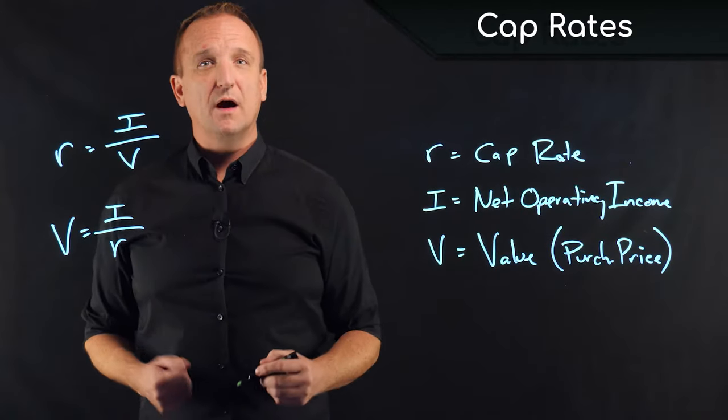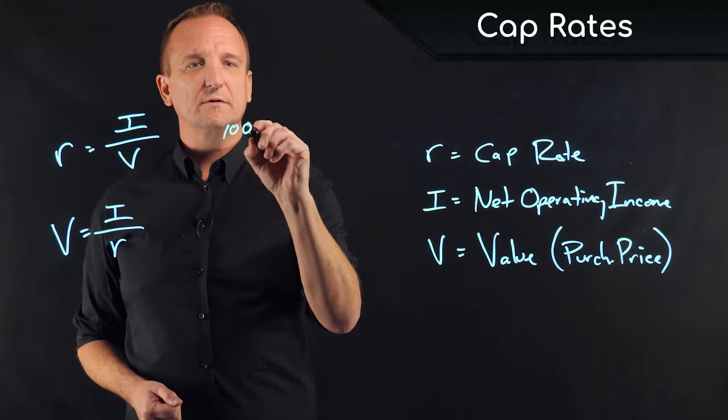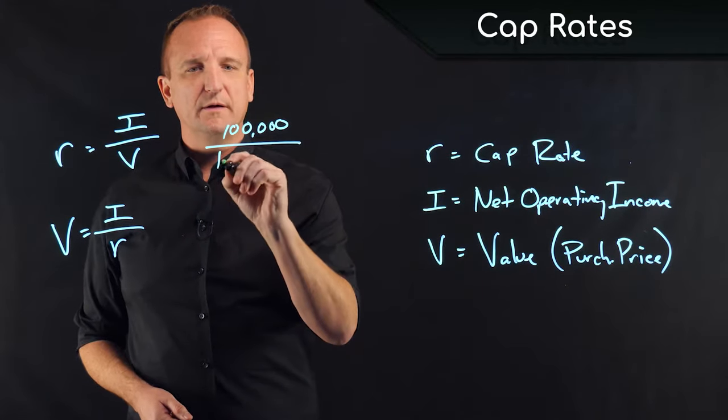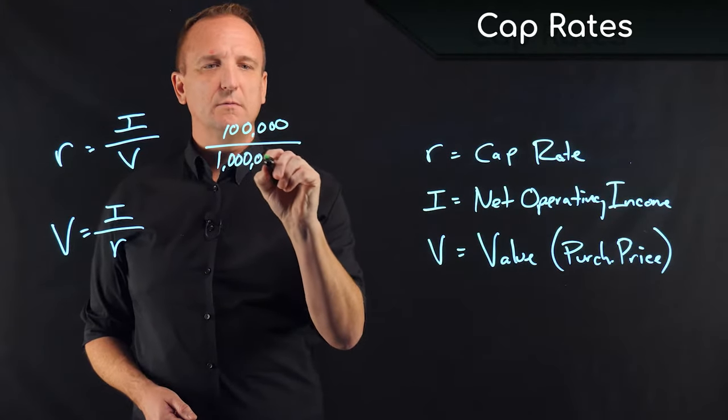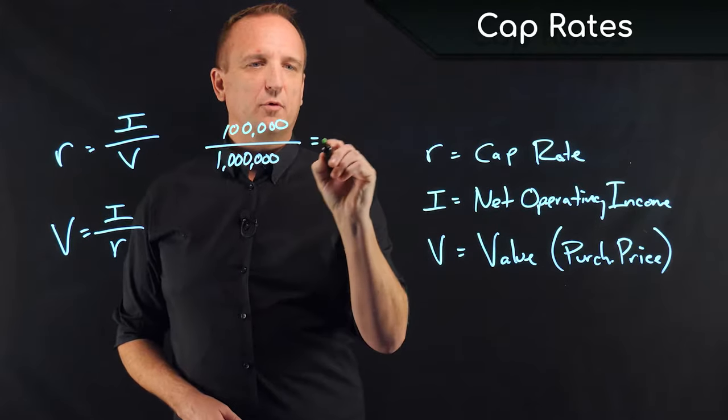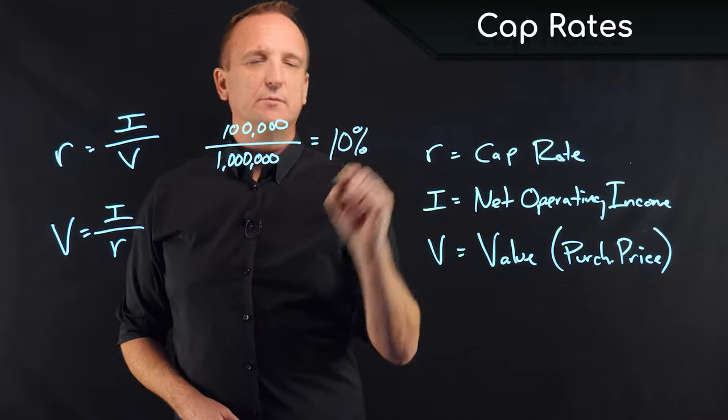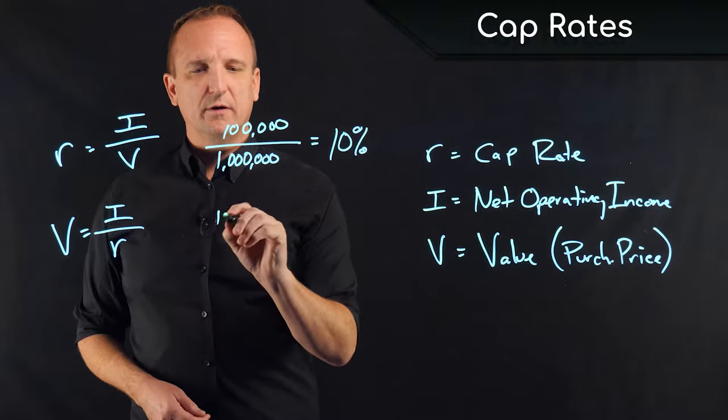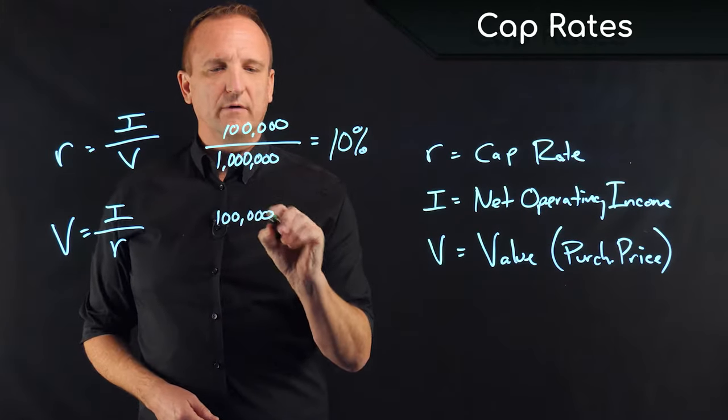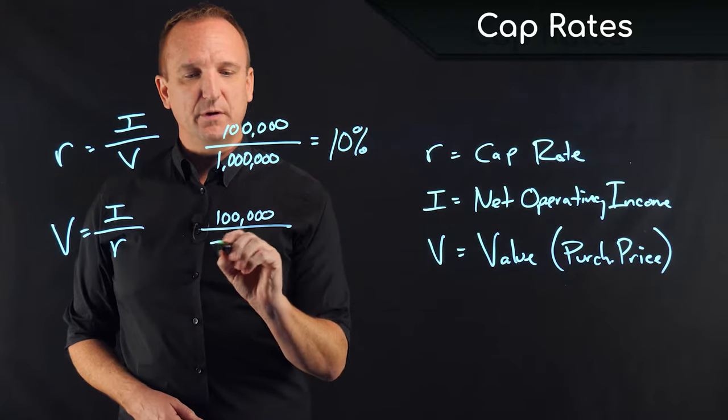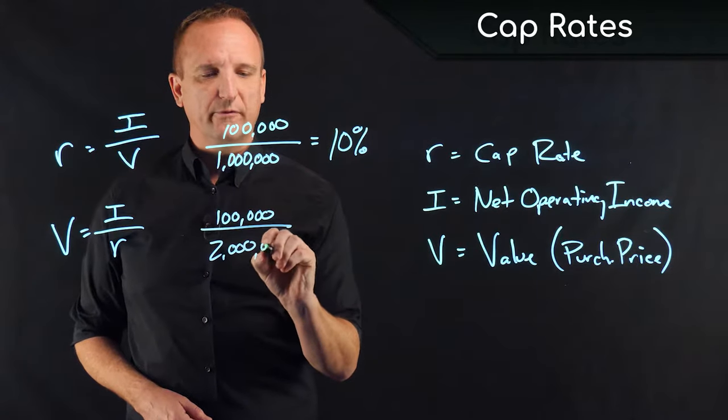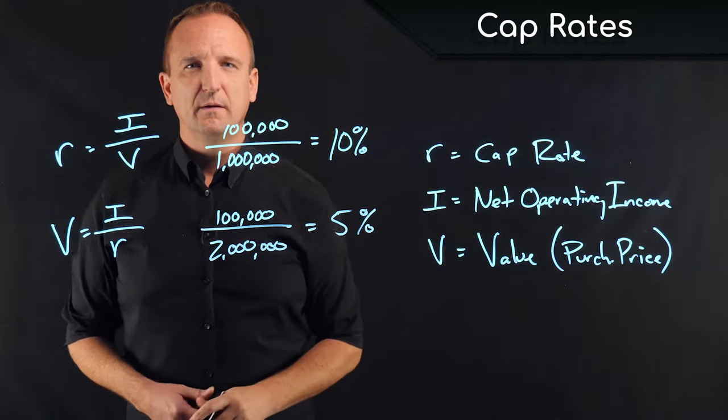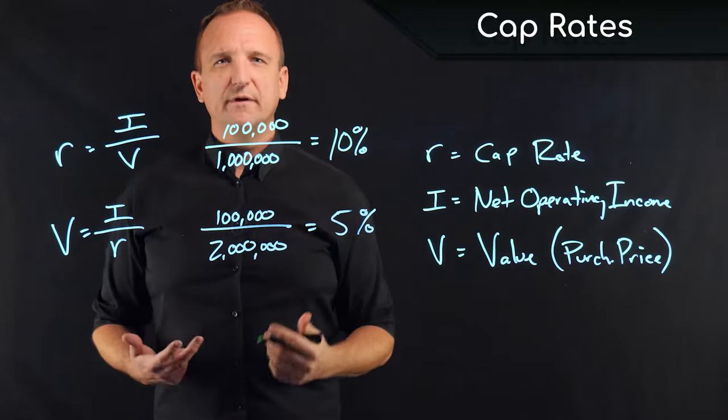Imagine you have a property with a net operating income of $100,000, and the value of that property is $1 million. That gives us a cap rate of 10%. If that same property with $100,000 of net income had a $2 million purchase price or value, it would have a cap rate of 5%.